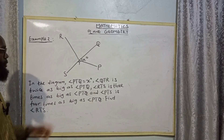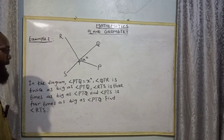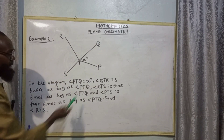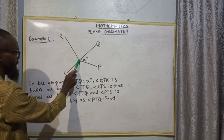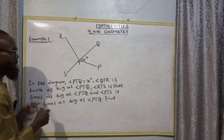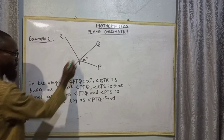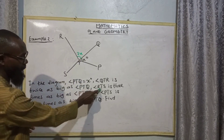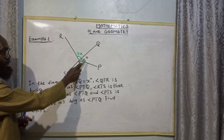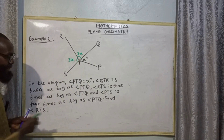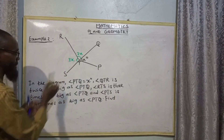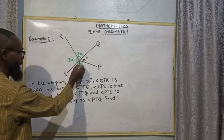Example 2: Looking at this diagram, angle PCQ is equal to x degrees. Angle QCR is twice as big as angle PCQ, meaning this one is 2x. Likewise, angle RCS is 3 times as big as angle PCQ, so this one is 3x. And angle PCS is 4 times as big as angle PCQ, so PCS is 4x.